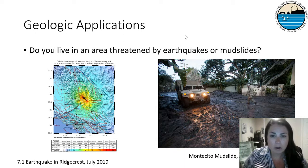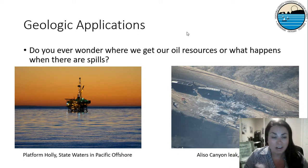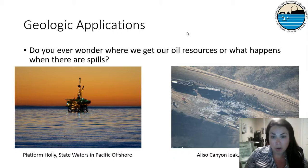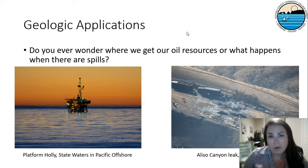Do you ever wonder where we get our oil resources or what happens when there are spills? These are things that are happening in our backyard right here in California. The picture on the left is Platform Holly, which is from the state waters just offshore near Carpinteria. And the picture on the right is Aliso Canyon. If you were here in 2015, this was all over the news — there was a gas leak. We're going to learn about oil and gas applications and what happens when they leak and what the environmental implications are for that.